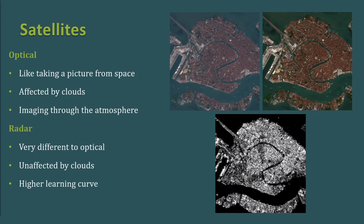To give an overview of satellites, we can roughly split them into two groups: optical satellites and radar satellites. Optical will be familiar to most people because it's essentially like taking a picture from space. Since you're in space, you're affected by clouds and imaging through the atmosphere — the image on the left appears slightly blue and hazy because of the atmosphere. Someone invented the so-called atmospheric correction algorithm, which estimates what the ground would look like without the atmosphere, and you can access both versions.